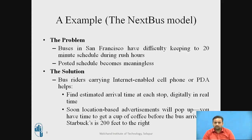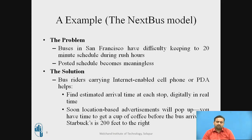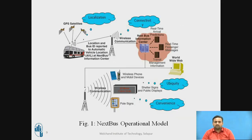To overcome this situation, digital real-time location-based advertisement and services were introduced, showing the actual location of the bus so that passengers can plan accordingly, reach the station on time, or complete other tasks beforehand. This becomes very useful for passengers — location-based services are provided here.